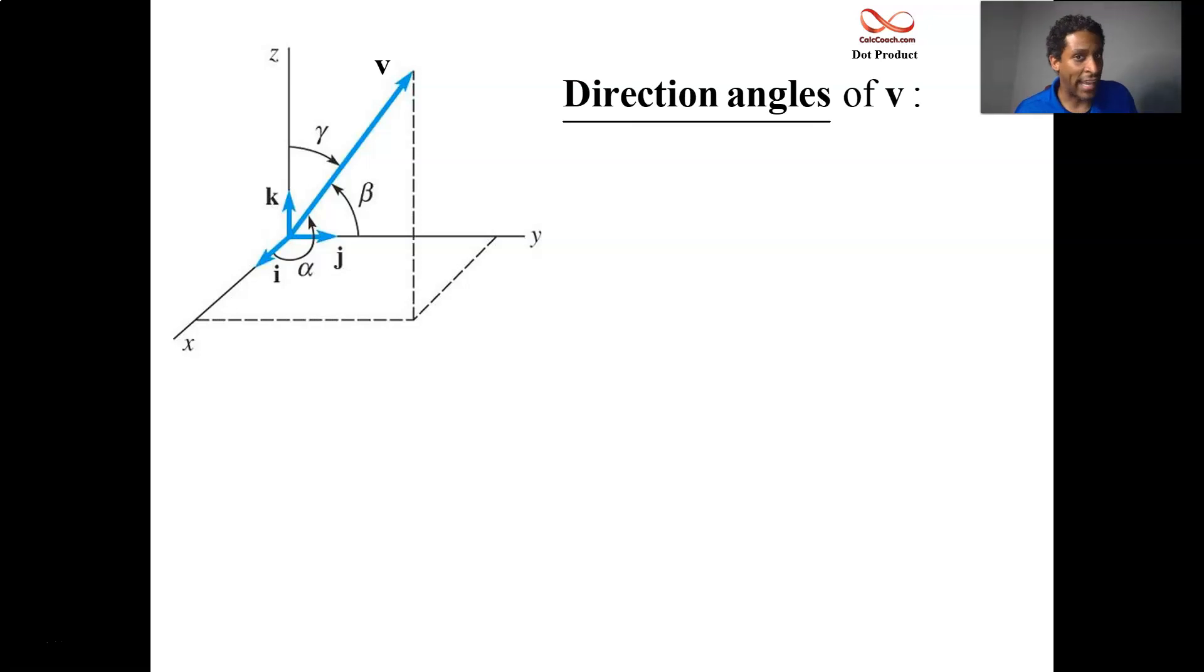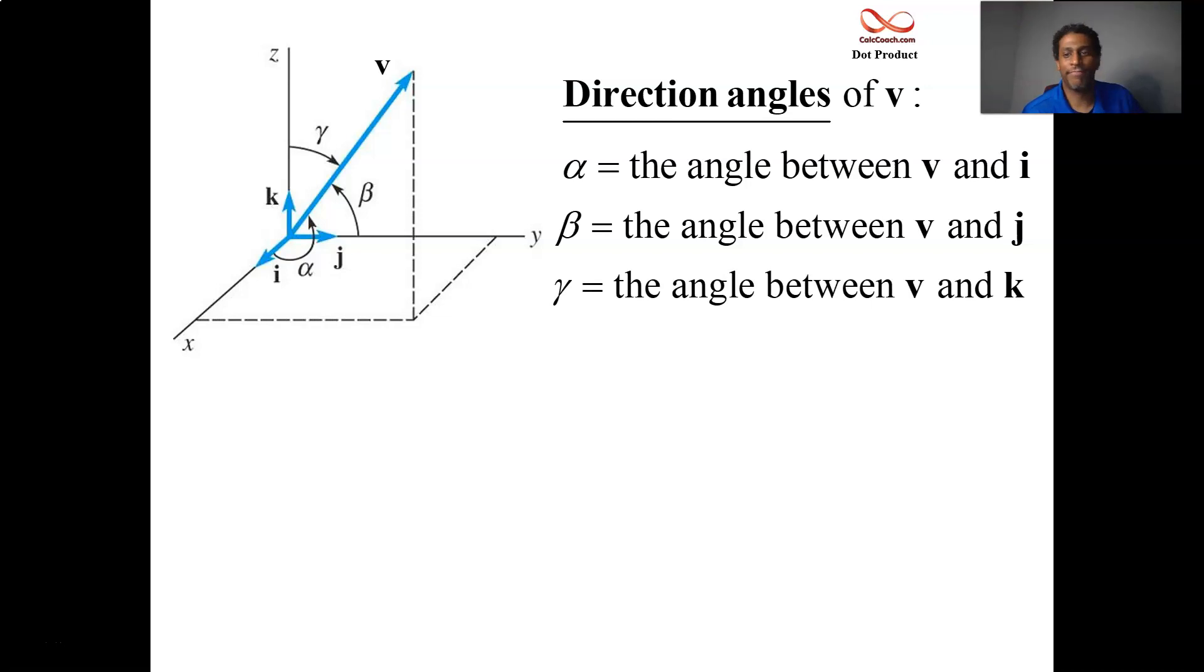They're called direction angles. Let's call the angle that you make with i alpha, the angle that you make with j beta, and the angle that you make with k gamma. Let's see if we can figure this out. We know the vectors i, j, and k, and let's say generically our vector is v1, v2, v3.